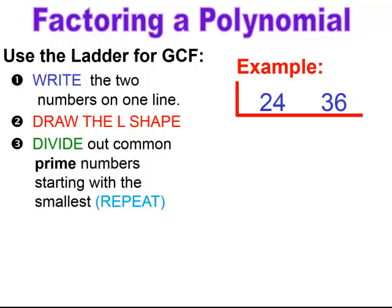When I look at 24 and 36, I want to find the prime factor in both 24 and 36. Because they're even, 2 is a prime number and will divide into both of them. So I'm going to write 2 on the outside of the box and divide it into 24 and 36. Whatever's left goes underneath: 24 divided by 2 gives 12, and 36 divided by 2 gives 18.